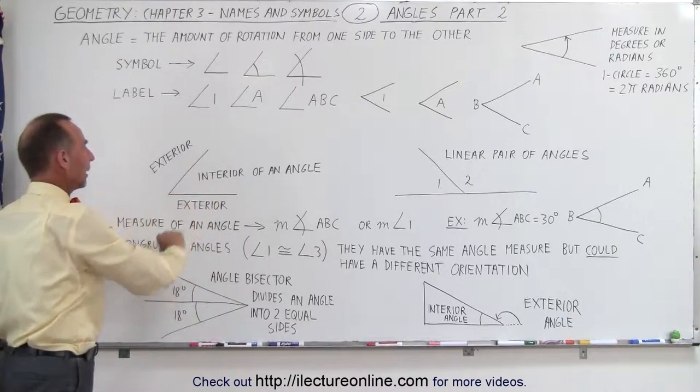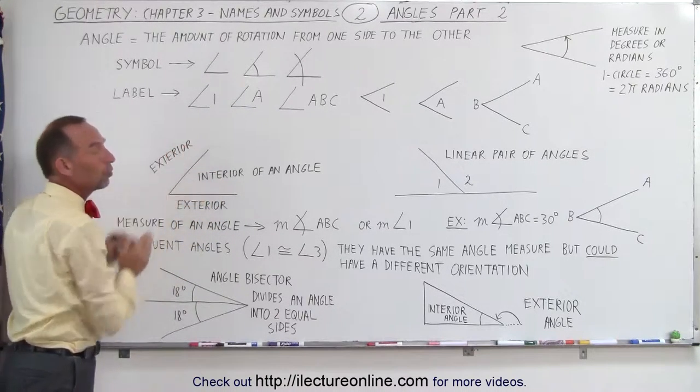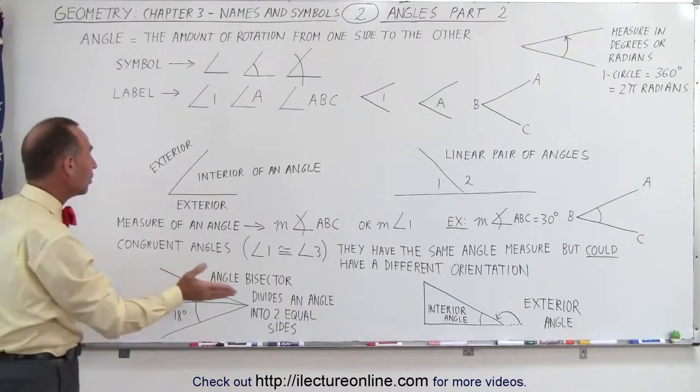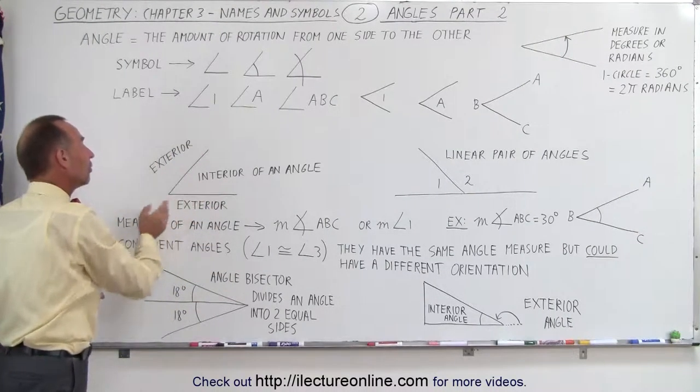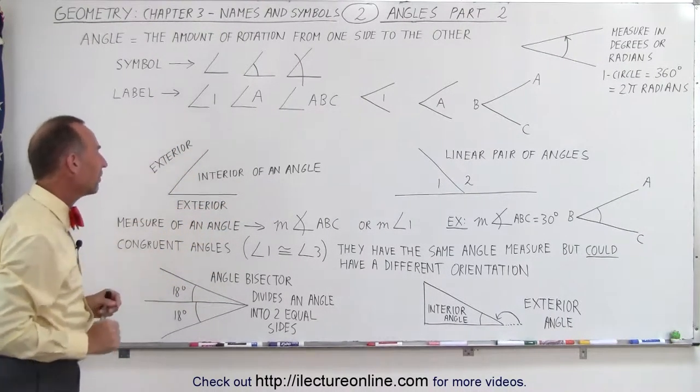Here we have an angle drawn and notice that there's what we call the interior of the angle which is between the two sides and then there's the region on the other side of the two sides which is called the exterior region of an angle. So we have the interior of an angle and the exterior of an angle on the other side.